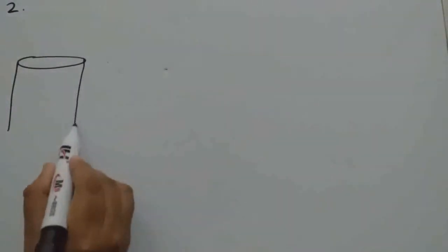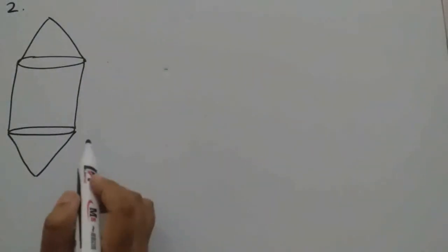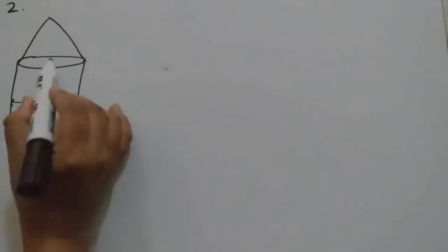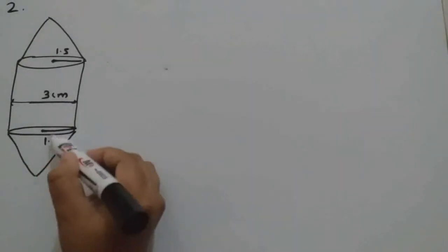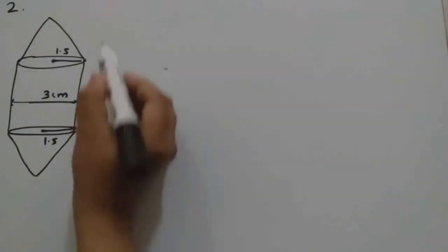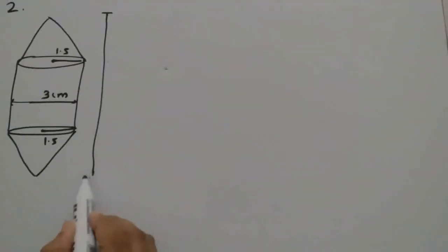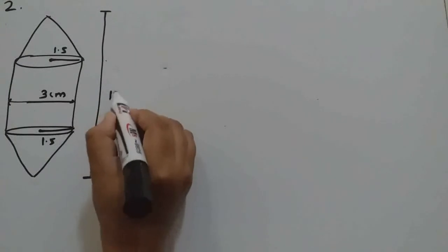Question number 2: Rachel, an engineering student, was asked to make a model shaped like a cylinder with two cones attached at its two ends. The diameter of the model is 3 centimeters, so the radius is 1.5 cm — the same for both the cone and cylinder. The total length of the model is 12 centimeters.